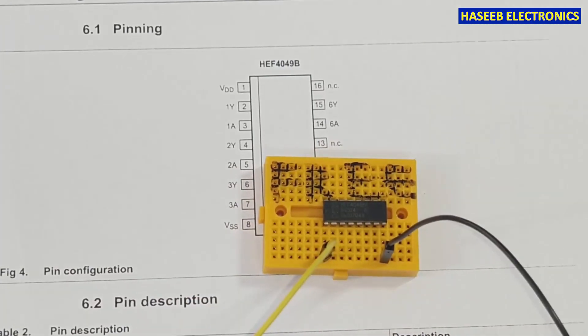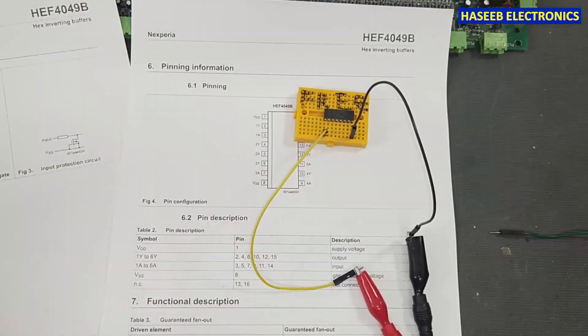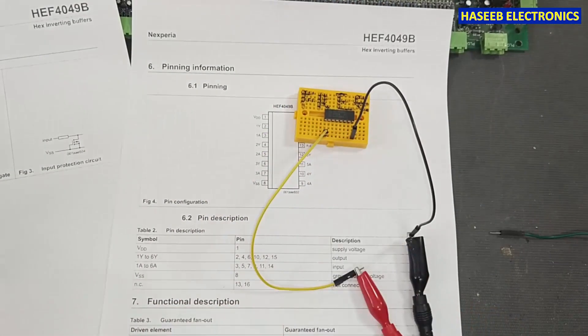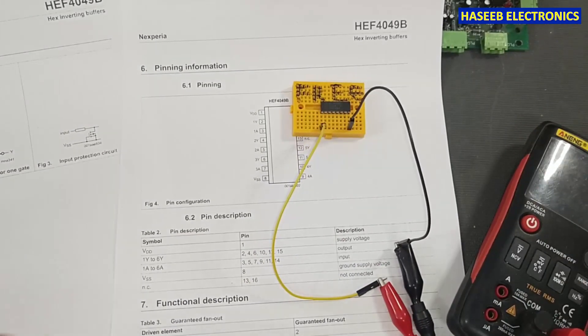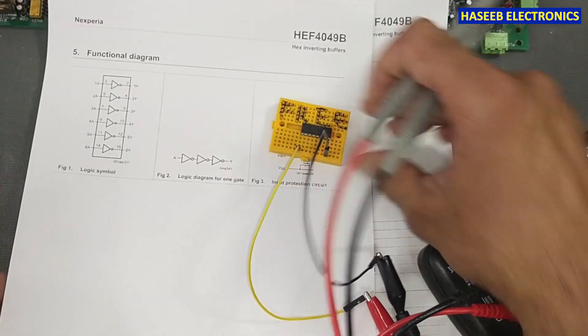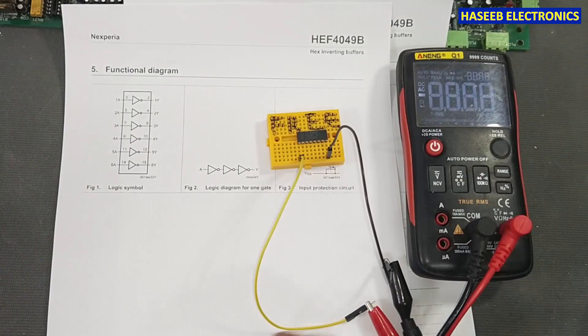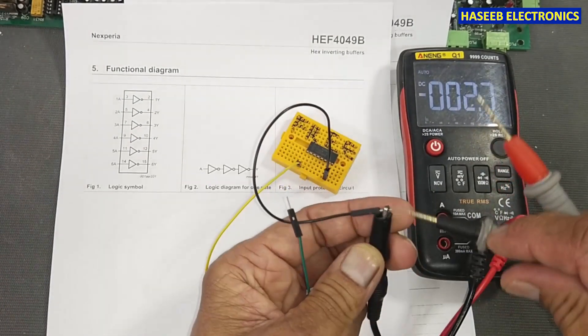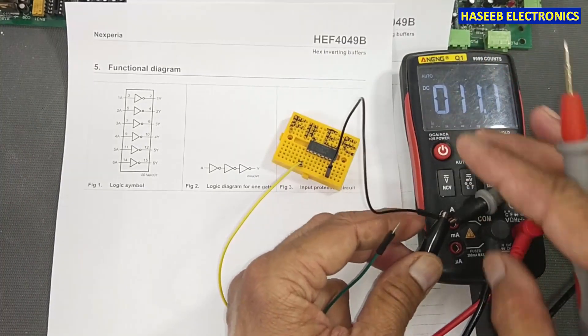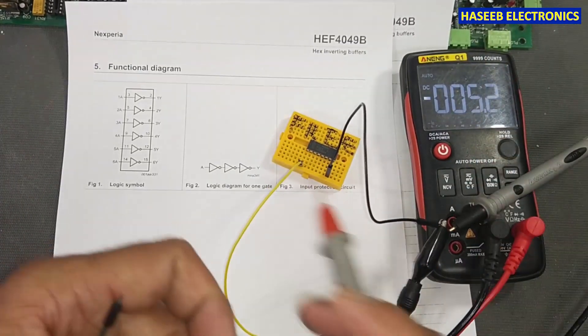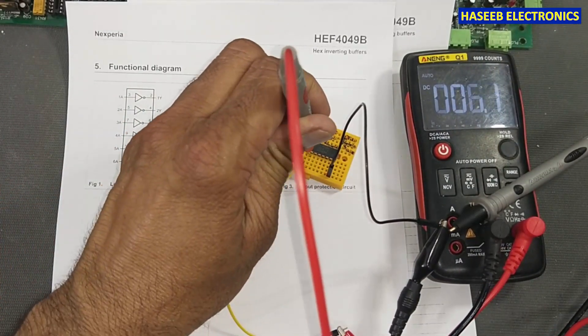I will connect positive voltage here, ground here. We can apply from 3 volts to 18 volts. Set the multimeter to DC voltage and we will connect the common black lead to ground. The first output is pin 2.